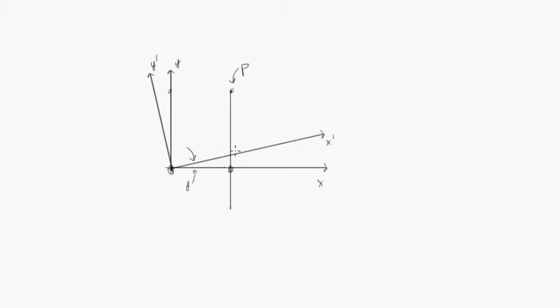And so we want to find our new distance. If we went straight up from x prime, the distance from here to here, that'll be our y prime value, and the distance from here to here, that'll be our x prime value.